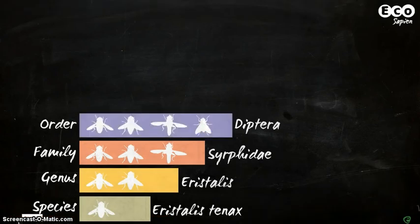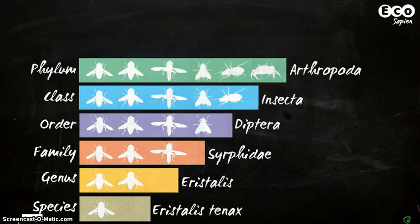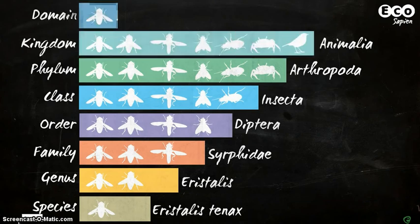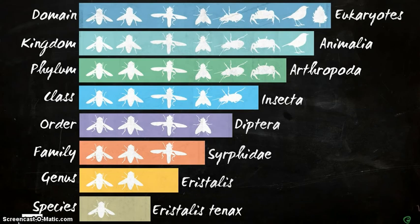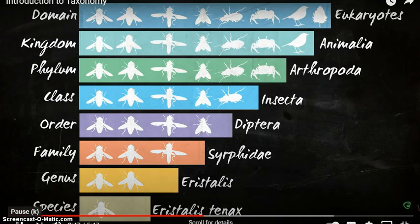Flies are insects, and insects are part of the phylum Arthropoda — animals with an external skeleton, segmented body, and appendages, like crustaceans, arachnids, and centipedes. Ultimately, the drone fly is part of the animal kingdom, and is a eukaryote, an organism whose cells contain a nucleus.